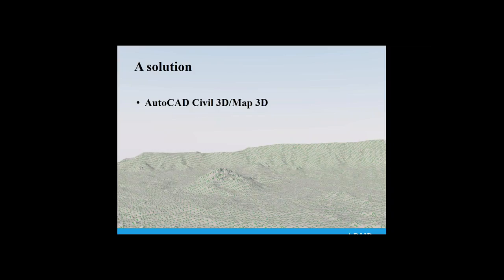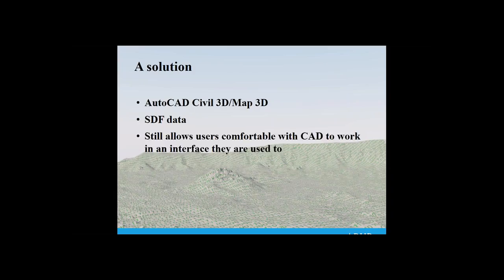The solution we came up with was to make data entry as simple as possible but actually link it to an external source of data. We decided to use AutoCAD Civil 3D or Map 3D and chose to use SDF data sets. Although Civil 3D will read shapefiles, they are quite limiting — if Civil 3D crashes, it tends to destroy the shapefile. So we decided to use the Autodesk native SDF. It still allows users to feel comfortable in a CAD interface they're used to, whereas asking people to do similar work in ArcGIS was a little bit difficult.